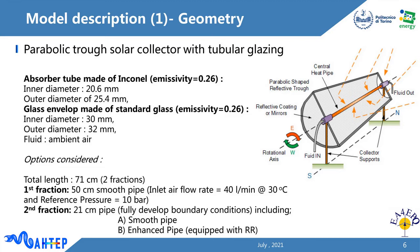The most common type of CSP collectors, which is the parabolic trough collector, was aimed to be equipped with such technology and its performance was analyzed through simulations. As indicated in the figure, a usual parabolic trough collector consists of a reflector that focuses sun rays on a tubular absorber to collect heat. A working fluid, which is air in this study, passes through the absorber to convey the absorbed heat and transfer it to the next unit for thermal purposes. A tubular glass envelope is also included to minimize heat convection loss and improve thermal efficiency.